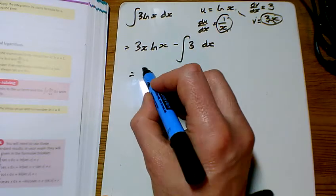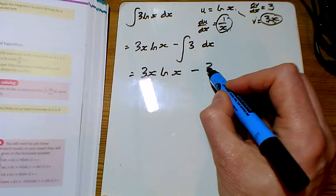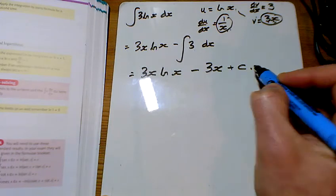And so, the answer is 3x ln x minus, integrate the 3, gives us another 3x, and put the plus c on the end.